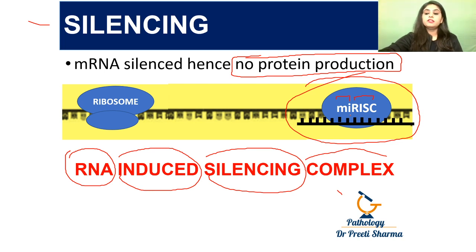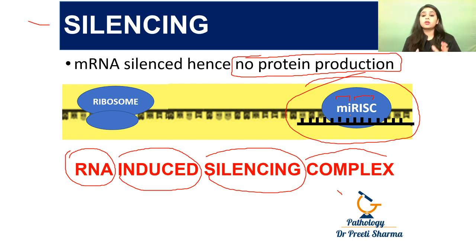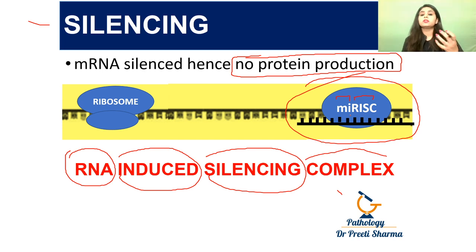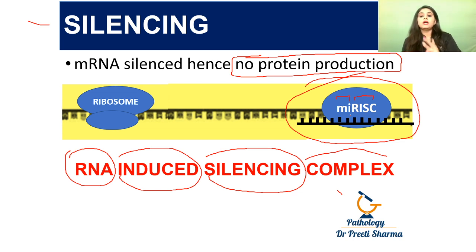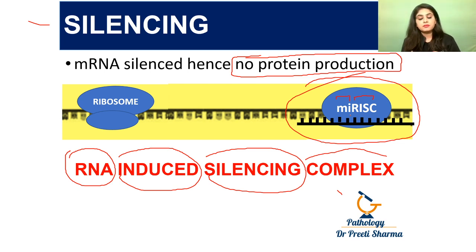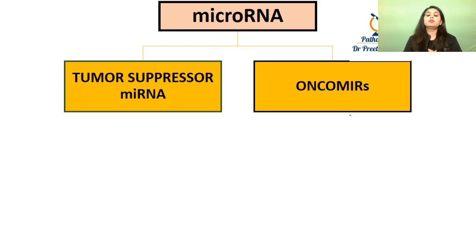A quick thumbs up if this entire pathway is clear. If you go back to Robbins, the same thing is written there — I've tried to bring an animated version so you remember it better, because AIMS tests your knowledge to the core with mechanisms and in-depth concepts. Key points: microRNA is single-stranded, and it forms a complex with RISC, blocking protein formation.